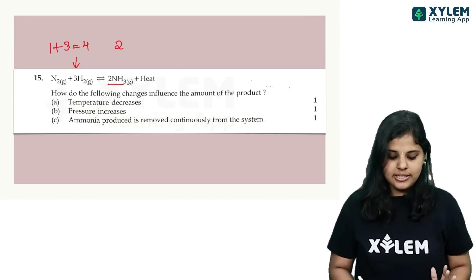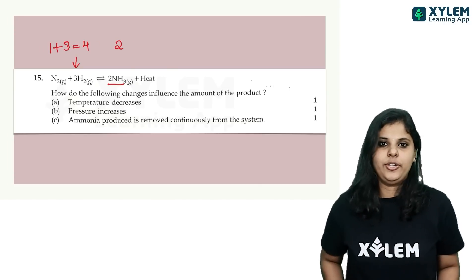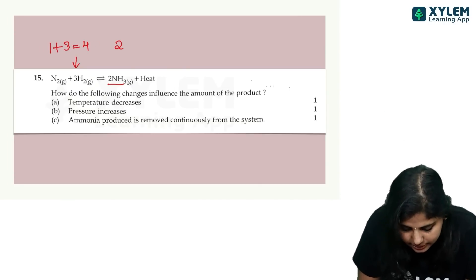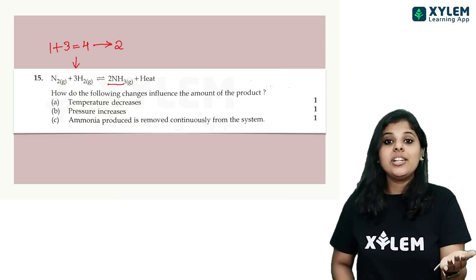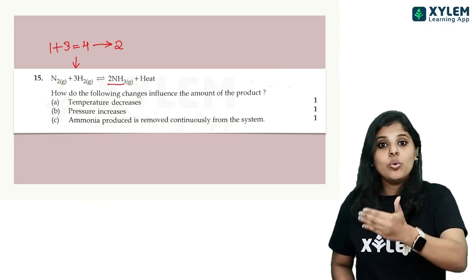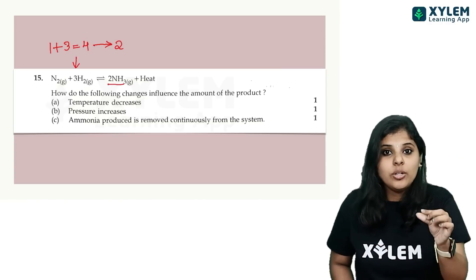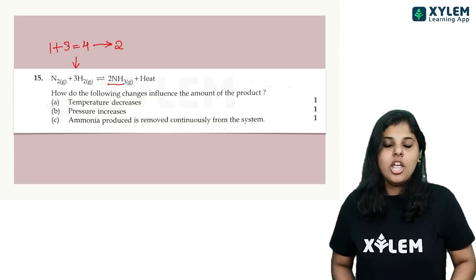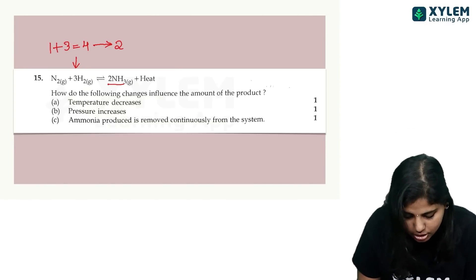On the right side there are two molecules. The four molecules on the left and two on the right will change in proportion. The higher the number of molecules on one side, increasing pressure will favour the side with fewer molecules, so the forward reaction increases.